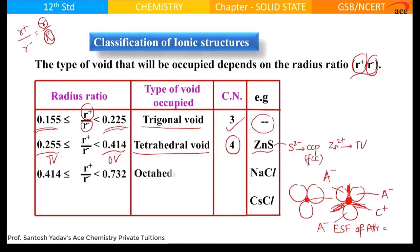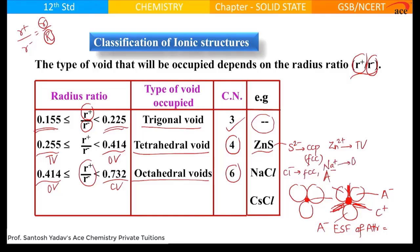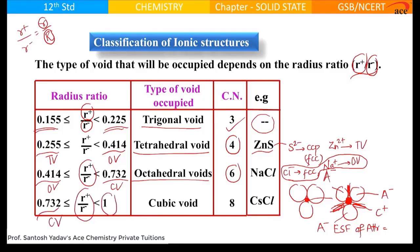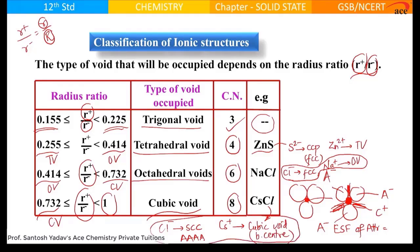If the radius ratio lies between octahedral void and cubic void, the cation will remain in the octahedral void with a coordination number of 6. Example is NaCl, where Cl⁻ makes up lattice points of FCC and Na⁺ occupies the octahedral void. If the radius ratio lies between cubic void and the size of the surrounding spheres, the cation goes into the cubic void with a coordination number of 8. Example is cesium chloride, where chloride makes up SCC — AAA packing — and cesium occupies the cubic void, which can be imagined as the body center.